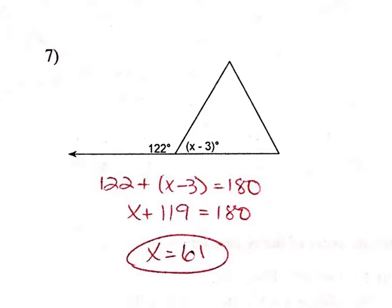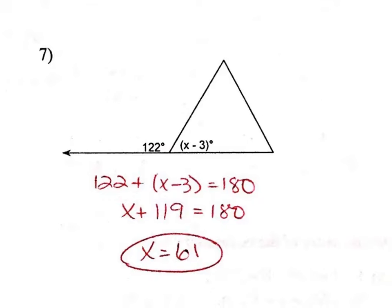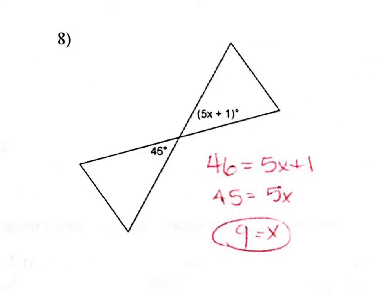Again, on seven, this is an example of linear pair or supplementary, so I'm going to add the two angles together and make them equal 180. Simple algebra is going to give me x equals 61. And then question eight, this was the new vocabulary we kind of touched on and made a big deal about today, vertical angles. So vertical are those that are across from each other and they are congruent, so we can set 46 equal to 5x plus 1. And then simple algebra will give me that x equals 9.